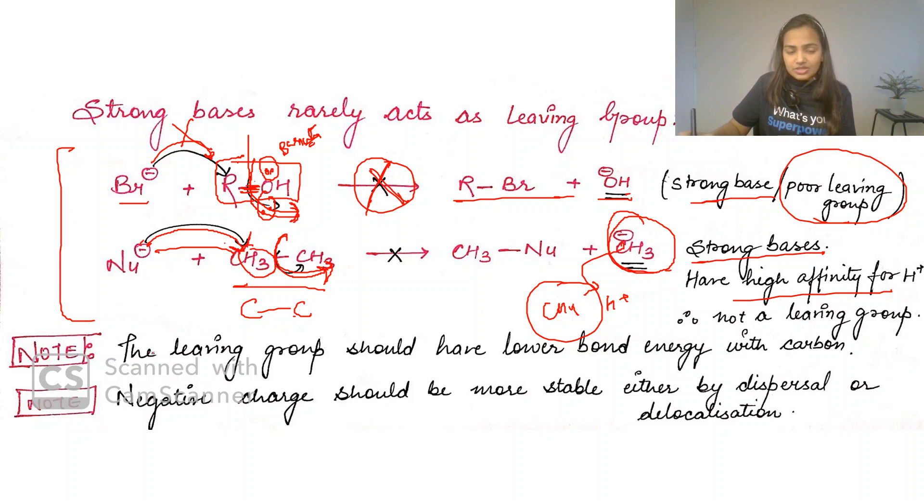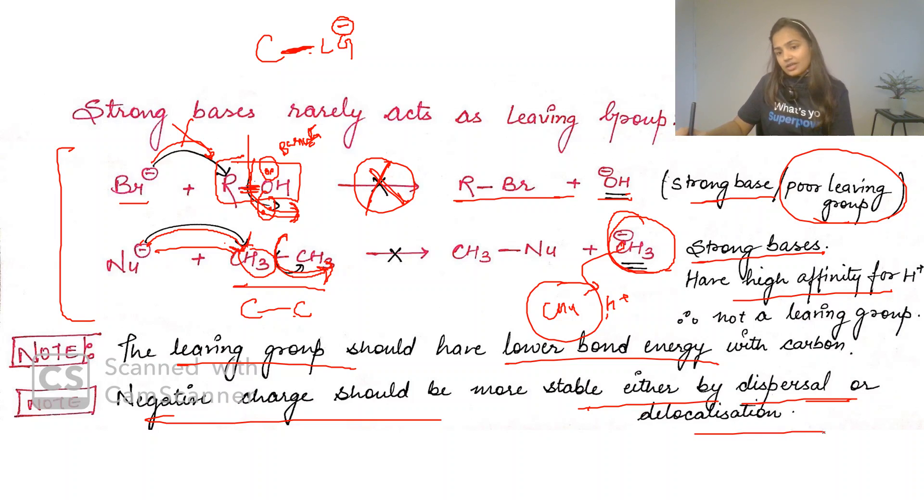So let's understand two things. The leaving group should have lower bond energy with carbon. The bond dissociation energy should be very low for the bond to break. And if there's a negative charge, that negative charge should be more stable either by dispersal or by delocalization. So it will be a weak base and hence a good leaving group. Ultimately, weak base is a good leaving group.